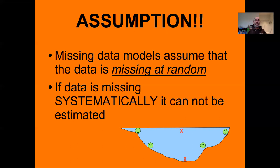The key point is that there should be no systematic pattern to why things are missing. A lot of data is missing randomly — but if data was missing during cloudy conditions while you only observe during sunny conditions, you can't use that information to impute the missing data.